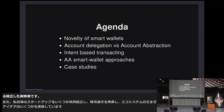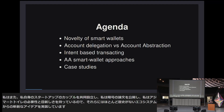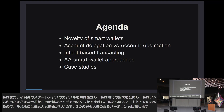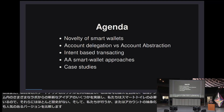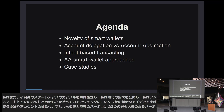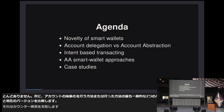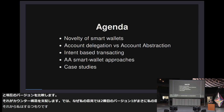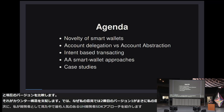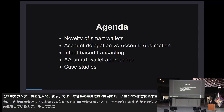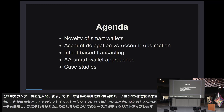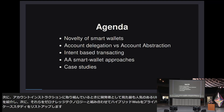On the agenda we have the necessity and novelty of smart wallets and a little history on them, then comparing the two most popular versions of account abstraction — namely delegation and the current version — then why the second version won. Then I'll present the most popular developer SDK approaches for account abstraction, and list some case studies on how they can be combined with zero-knowledge technology to bring hybrid web privacy into these new use cases.